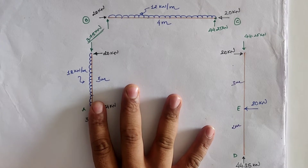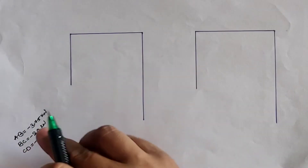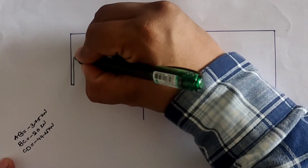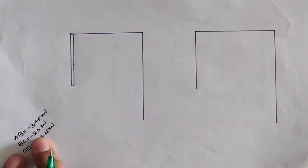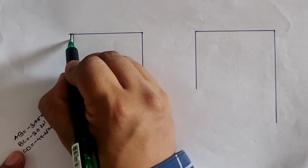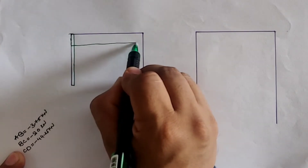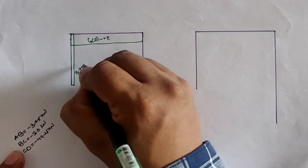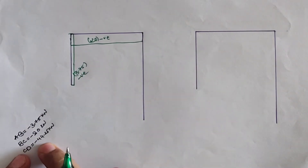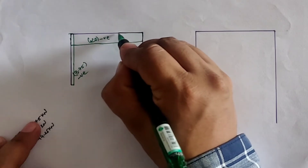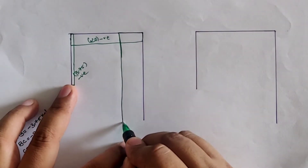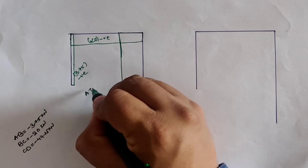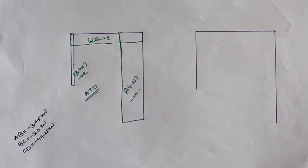For the axial thrust diagram: the AB span carries 3.75 kN compressive load, BC carries 20 kN compressive load, and CD carries 44.25 kN compressive load. This gives a negative axial thrust diagram for the given frame. Without taking scale, the diagram is drawn as shown in the figure.